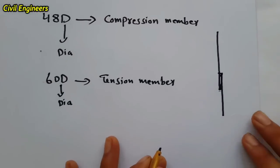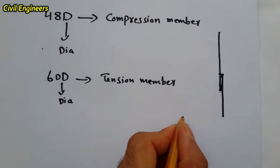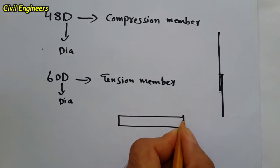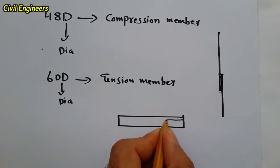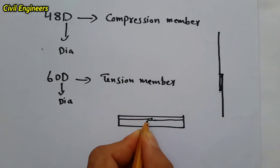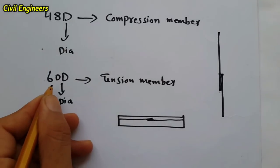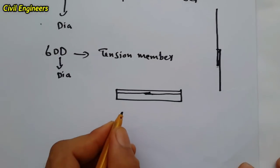In tension member we know that we have a beam, so in beam we can use lapping length with the formula 60D. And also in slab.